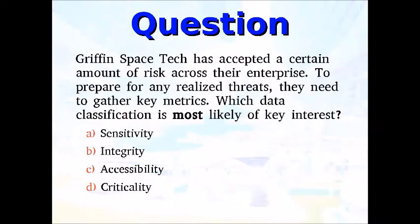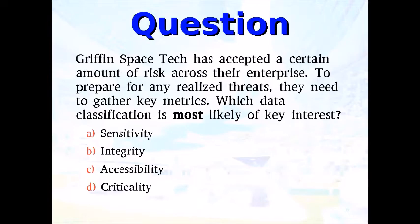Kirk reads the question: Griffin Space Tech has accepted a certain amount of risk across their enterprise to prepare for any realized threats. They need to gather key metrics — which data classification is most likely of key interest? Spock explains: they've done a risk assessment and applied some preventive controls, but there are certain risks they did not prevent. Whenever you don't prevent a risk, you need ways to detect and respond, and you do a business impact analysis — really in the realm of business continuity planning.